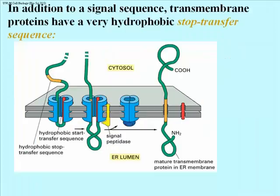We've talked about how proteins packaged for secretion end up inside the RER. Proteins that end up in peroxisomes and lysosomes also go through this process. Recall that some proteins produced by ribosomes on the RER don't actually go all the way into the lumen but become membrane proteins instead.